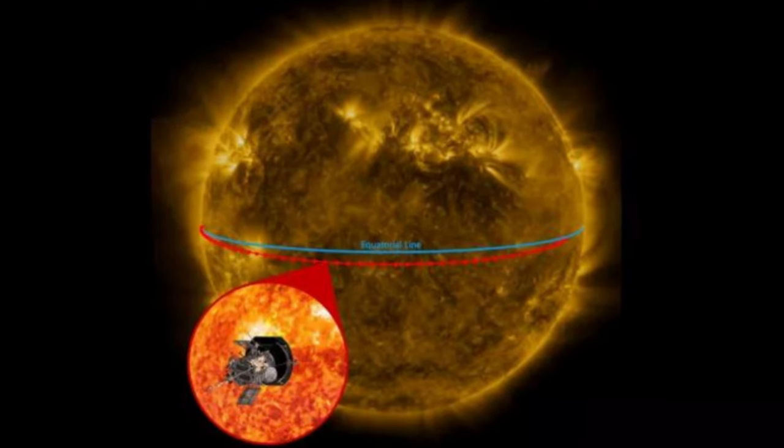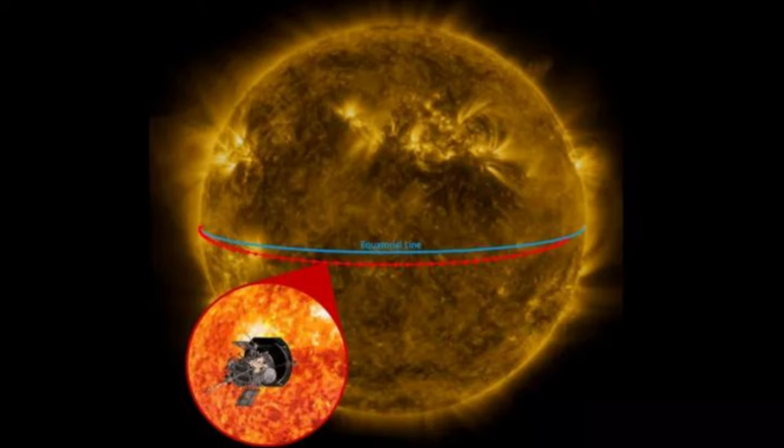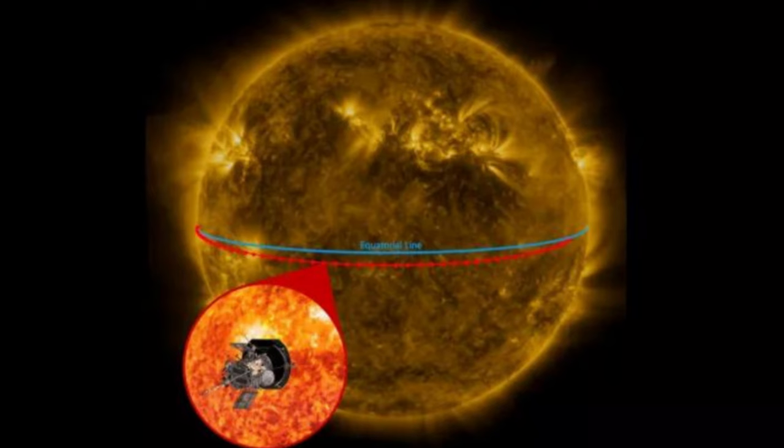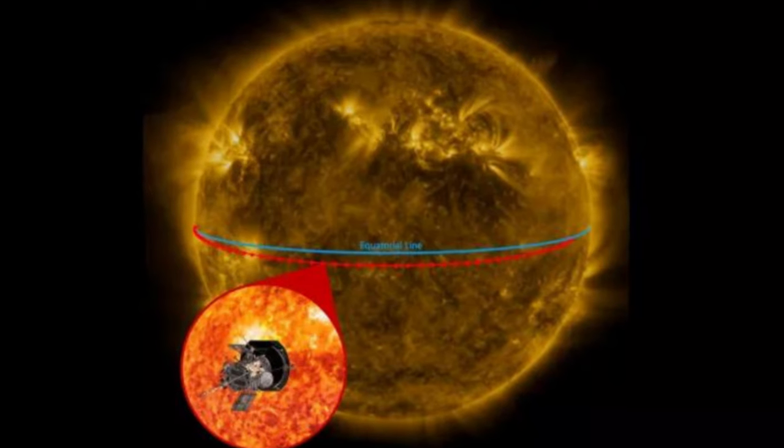But what the long-distance view did provide is valuable context for what the spacecraft saw close up, from as close as 5.3 million miles, 8.5 million kilometers from the sun's surface.